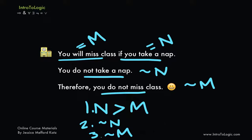Step back and ask yourself: do we have the formula for denying the antecedent? Do we have a conditional? Yes. Do we have the negation of the antecedent of that conditional? Yes. Do we have the negation of the consequent as the result? Yes. So this is a clear case of denying the antecedent. Keep in mind you could plug in any assertions for n and m, or p and q — as long as you maintain this structure, it's an invalid form of reasoning and specifically a form of denying the antecedent.